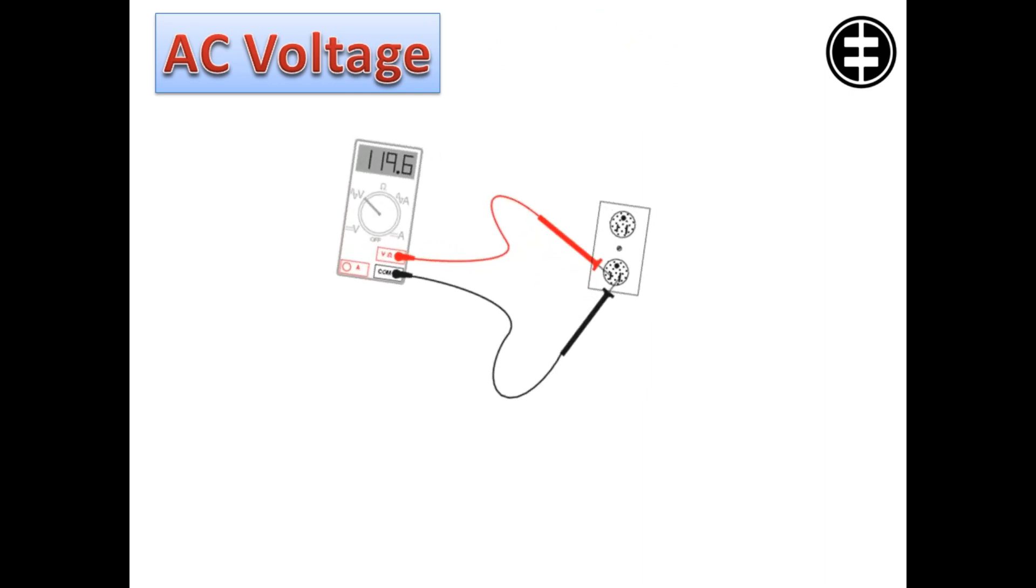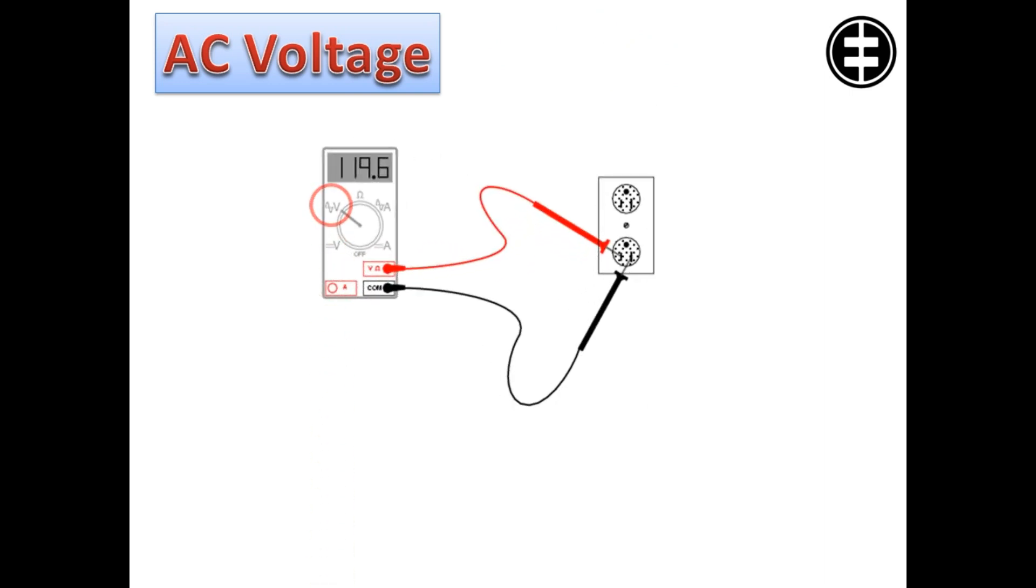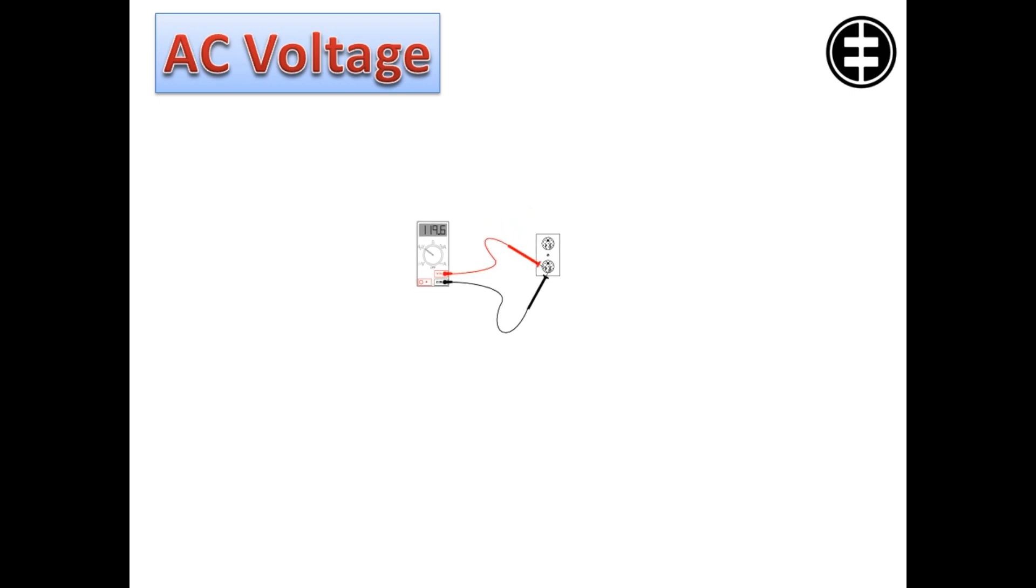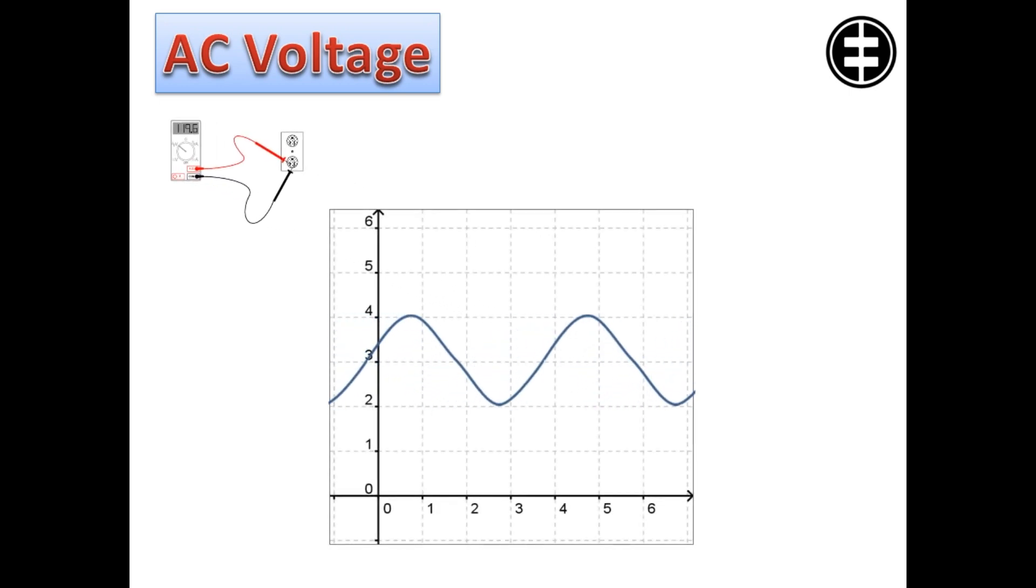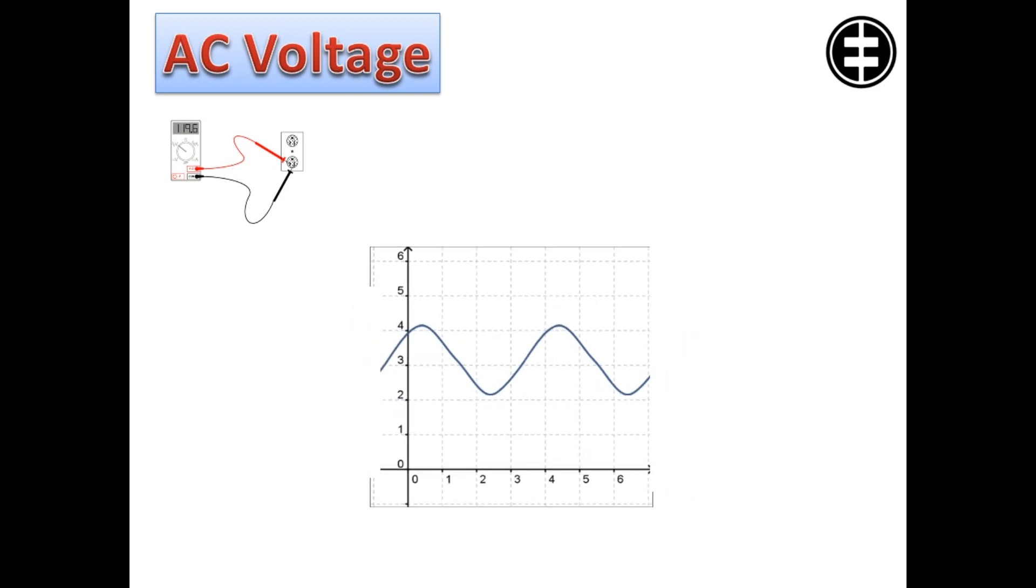Alternating current voltage, represented on a digital multimeter by this symbol, flows in evenly undulating sense waves. As shown below, AC voltage reverses direction at regular intervals.